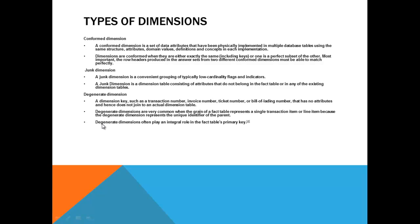Degenerate dimensions are very common when the grain of a fact table represents a single transaction item or line item because the degenerated dimension represents a unique identifier of the parent. So degenerate dimension will be only at the level of invoice. It will not go to the line item. All it will have is the highest level. It will tie to only the invoice number. Maybe if it is not quite clear even you will understand it actually when you implement.